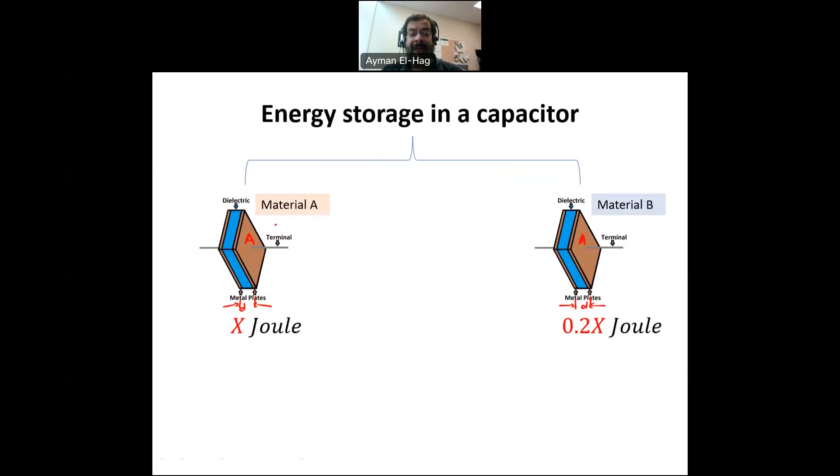But in one capacitor, we use certain material A. In the other one, we use another material B. We found that the first capacitor stored X joule amount of energy, while the second one only stored 0.2X. So, why is that?